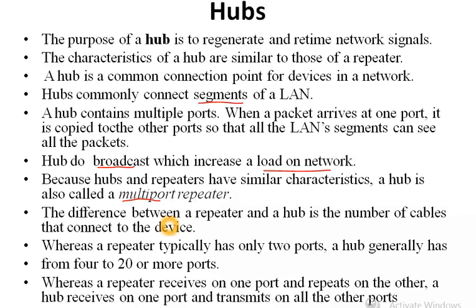The key difference between a repeater and a HUB is the number of cable connections. A repeater typically has only two ports. A HUB generally has from 4 to 20 or more ports. Whereas a repeater receives on one port and repeats on the other, a HUB receives on one port and transmits on all other ports.